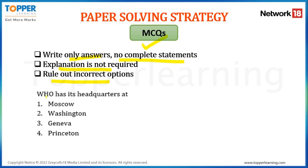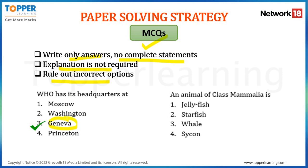Let's see this question: WHO has its headquarters at Moscow, Washington, Geneva, or Princeton. The correct answer is option 3, which is Geneva. One more question: an animal of class Mammalia is Jellyfish, Starfish, Whale, or Cyclican. Here, either you know that whale is the correct answer which belongs to class Mammalia, or you should know that the remaining three organisms do not belong to class Mammalia. This is how you arrive at answering a multiple choice question for your exams.